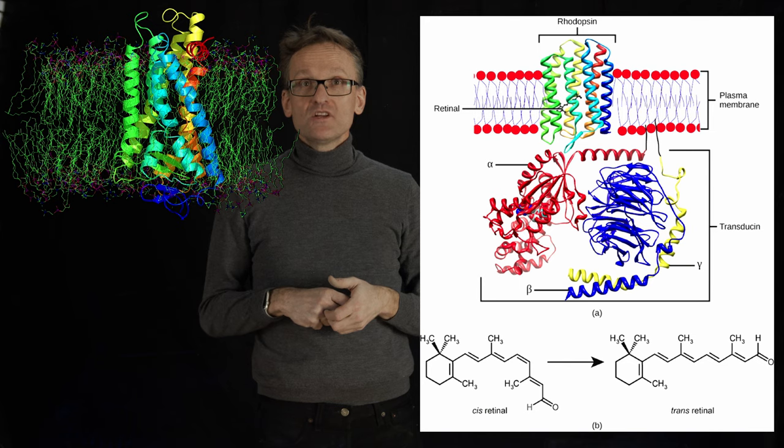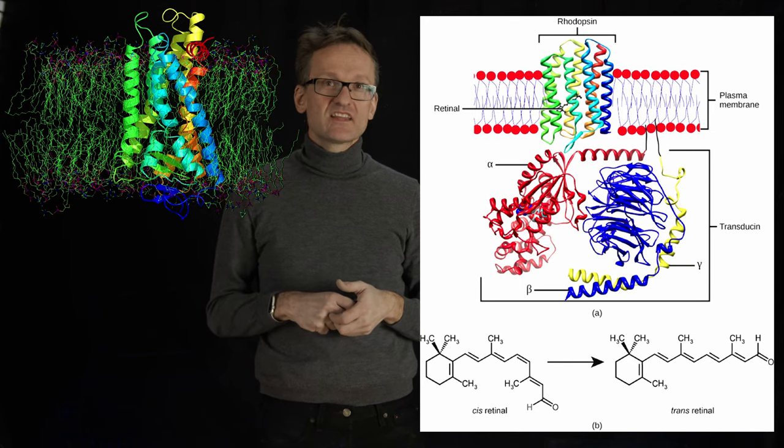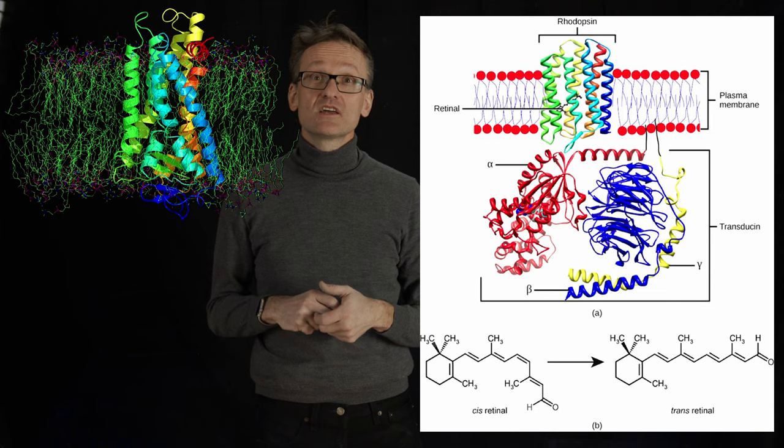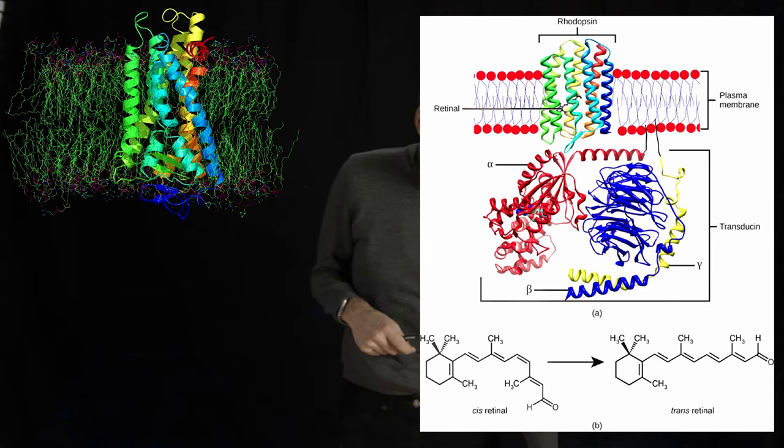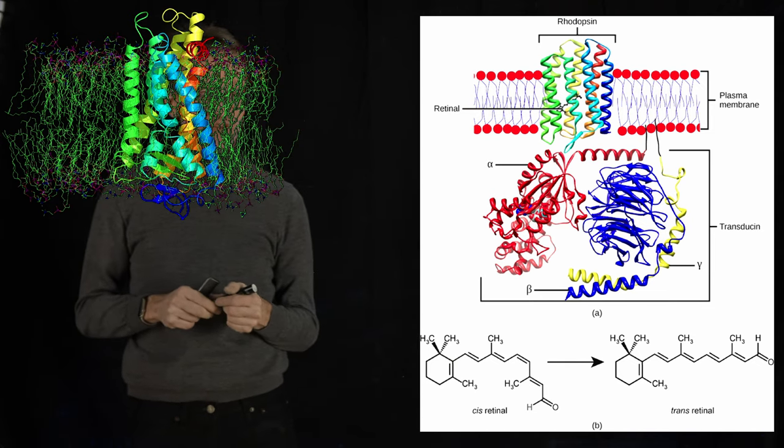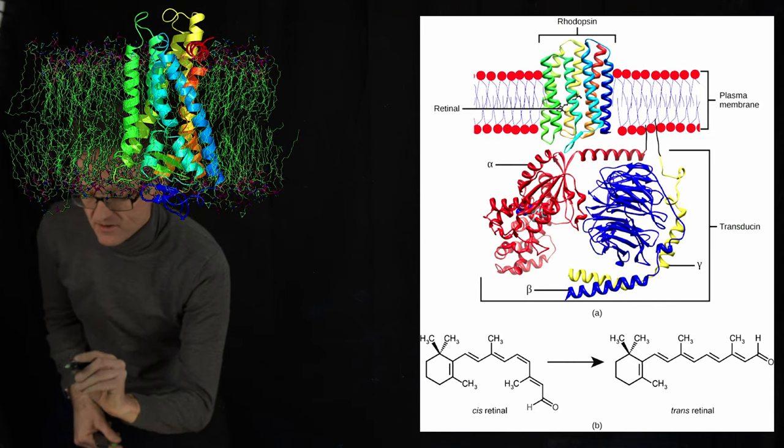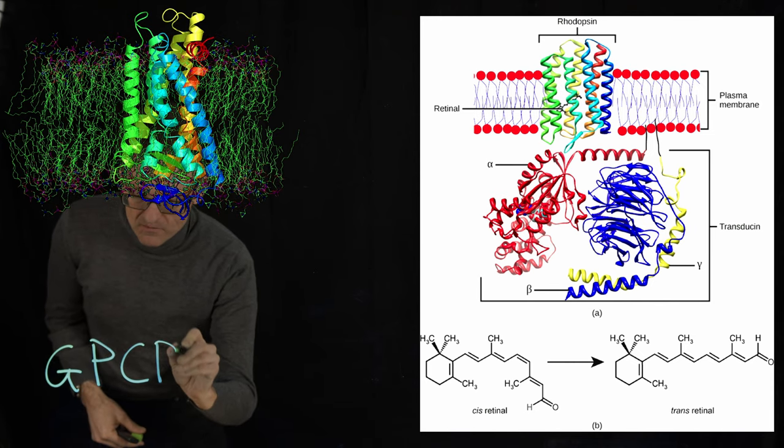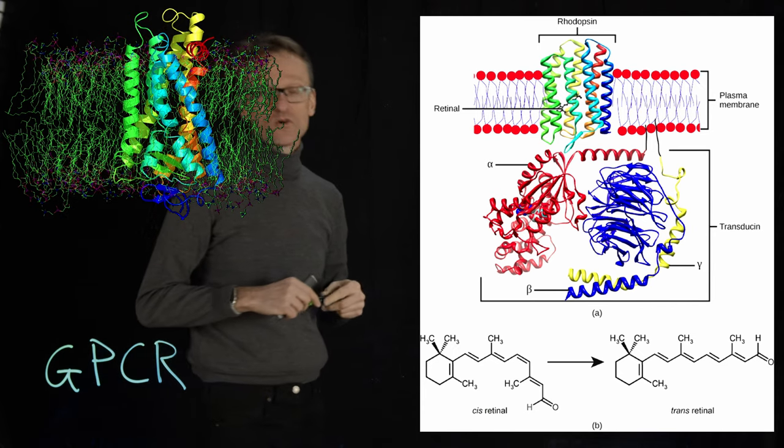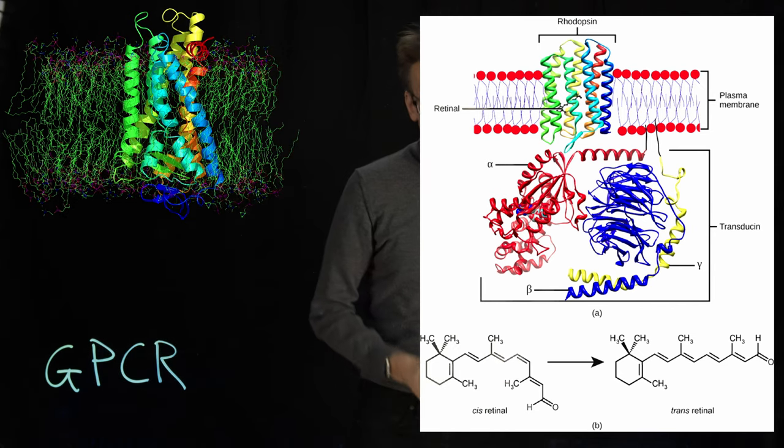A protein that is kind of a receptor for something that is coupled to a G-protein is typically called G-protein coupled receptor, GPCR. I'll draw that down here: GPCR. It's an exceptionally important class of proteins.